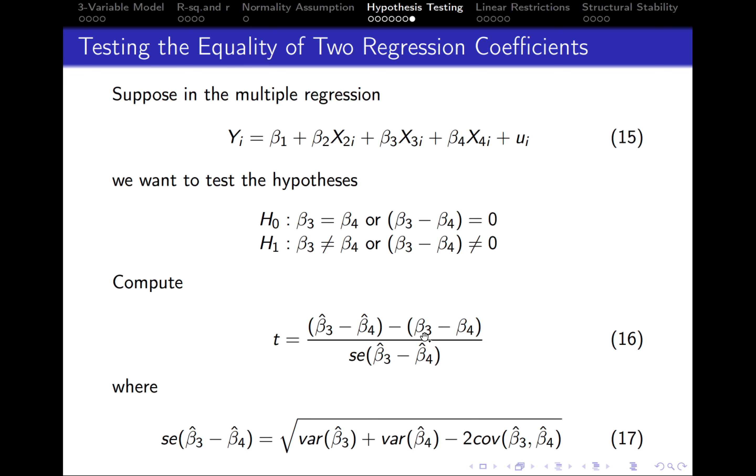And we subtract the hypothesized value. In our case, the difference between beta 3 and beta 4 is 0. So we'll just substitute the value of 0 here. And we divide everything by the standard error of the difference between the estimated beta 3 and beta 4.